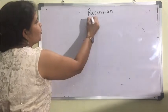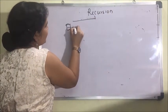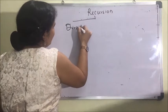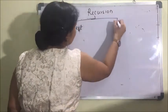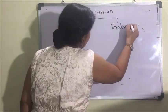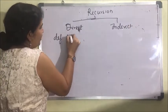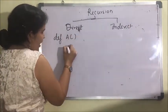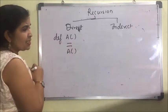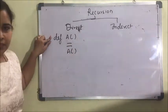Recursion can be of two types: direct recursion and indirect recursion. When I have defined function a and within its body I call function a, it becomes direct recursion.